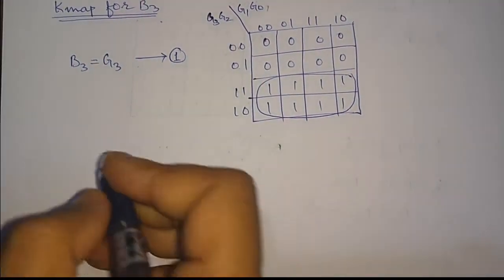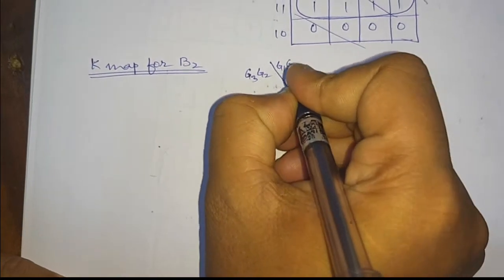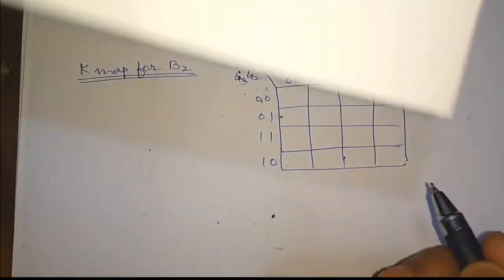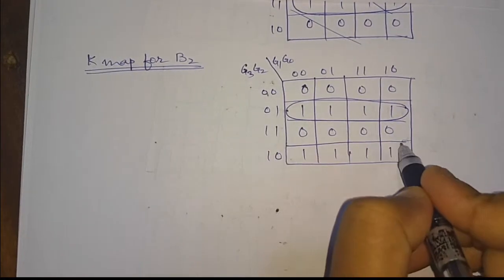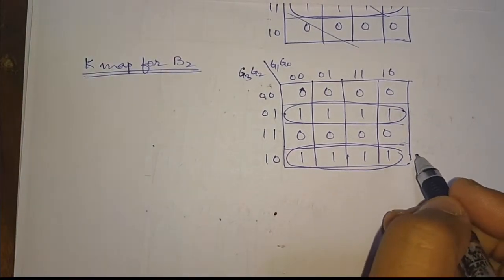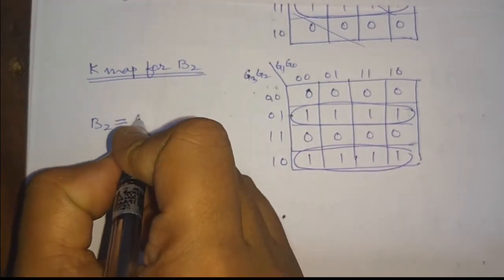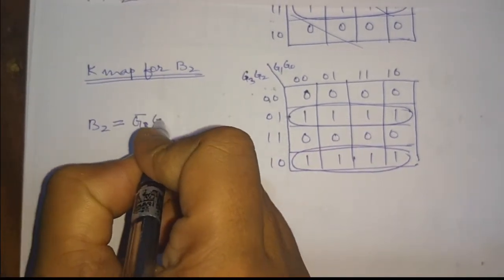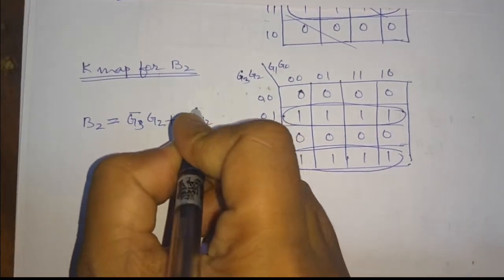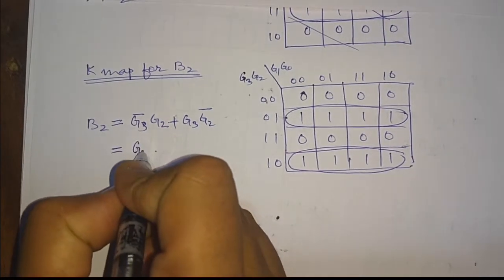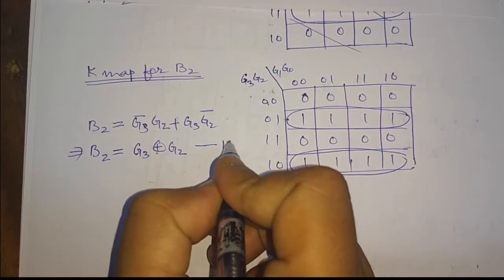Now we will make the K-map for B2. From the groupings we can find the expression for B2. B2 equals G3-bar · G2 plus G3 · G2-bar, which simplifies to the XOR expression: B2 equals G3 XOR G2. This is the expression for B2.